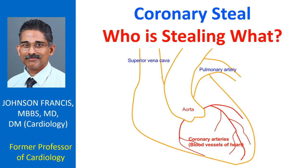Coronary steal is the term given to blood being stolen from one region of the coronary tree by another. It is also called coronary steal syndrome. In fact, the term steal is used in vascular medicine for one territory stealing blood from another territory. Another example of steal is subclavian steal, in which the arm steals blood from the brain so that the person feels giddiness during arm exercise.